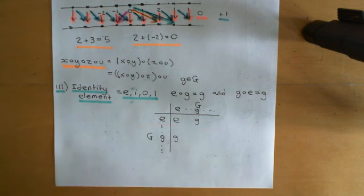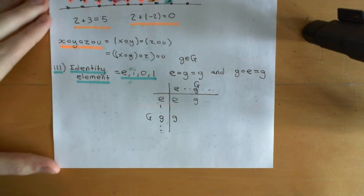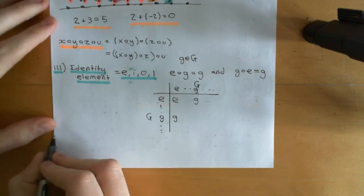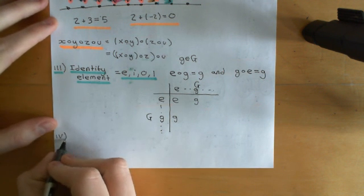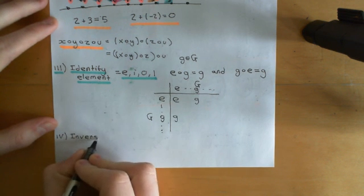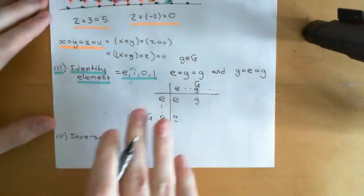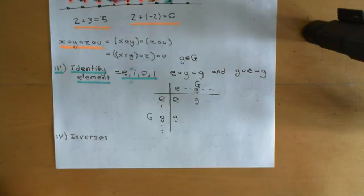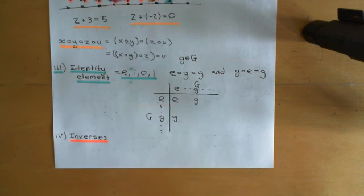We know that that set permutation will compose with any other set permutation to just give that other set permutation back again, whether you put it on the left or on the right — it doesn't matter. So that's the identity element. The fourth and final axiom that the composition law of a group has to obey is that you need to have inverses.